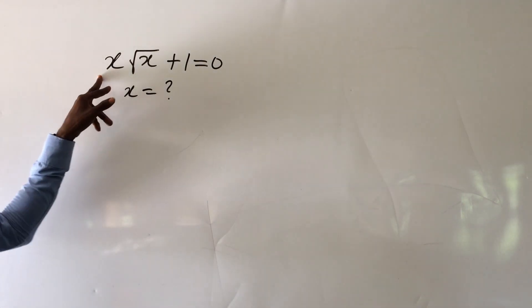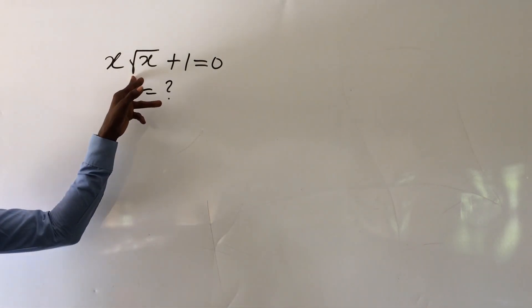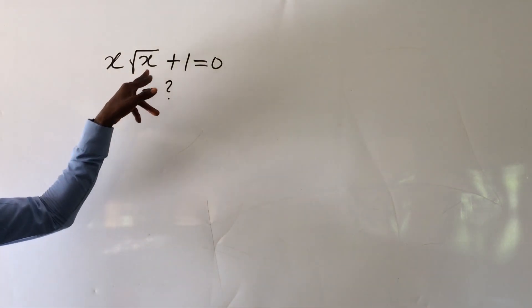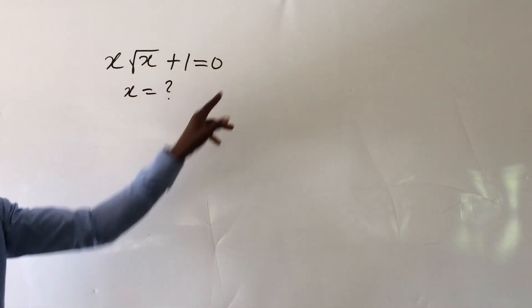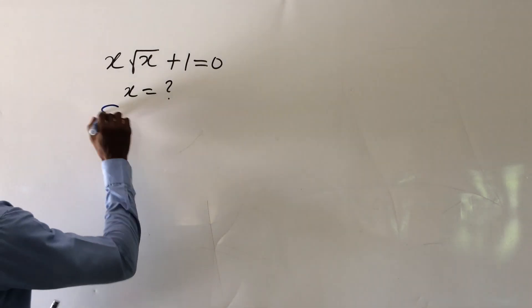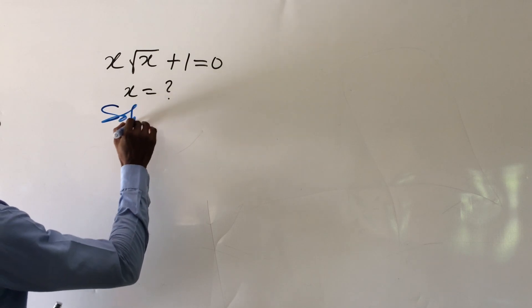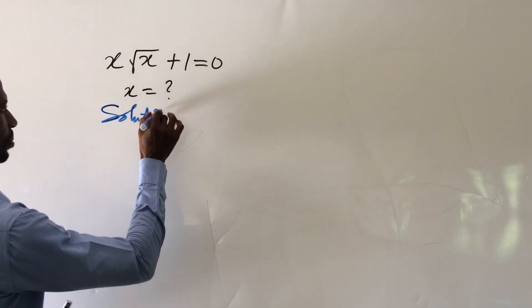The question is: x times the square root of x plus 1, equal to 0. What would be the possible value of x? We'll put down the question first. So we have our solution.